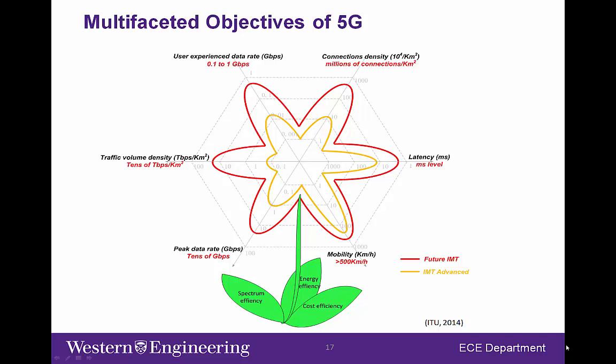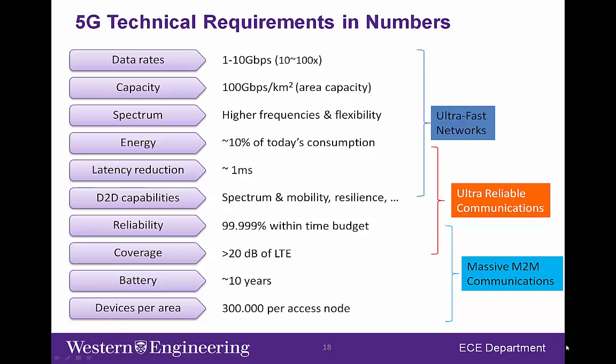The challenge of 5G is that we have to meet multiple objectives at the same time, including significantly increased system capacity, significantly increased device density, extremely short latency, and very high mobility. These design objectives of 5G are reflected by specific numbers listed on these slides. When we meet these numbers, 5G will be able to support ultra-fast, ultra-reliable, and extremely dense machine-to-machine communications.